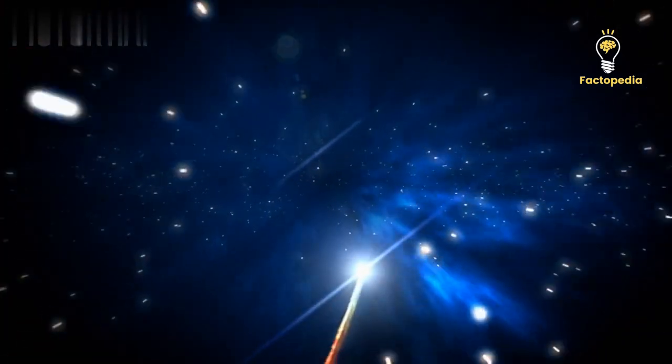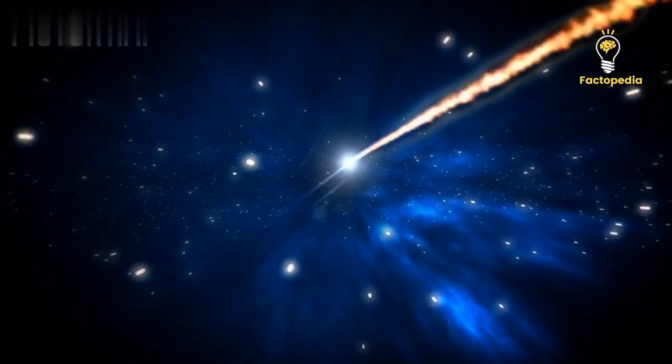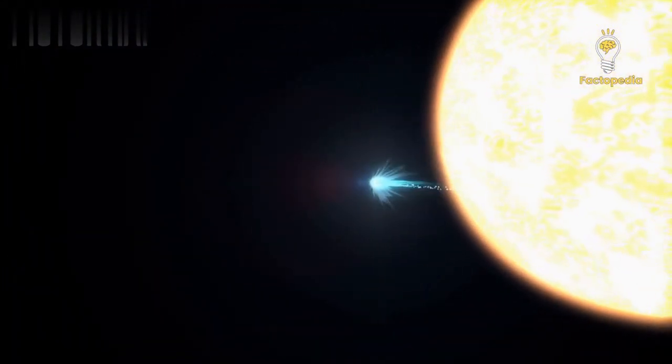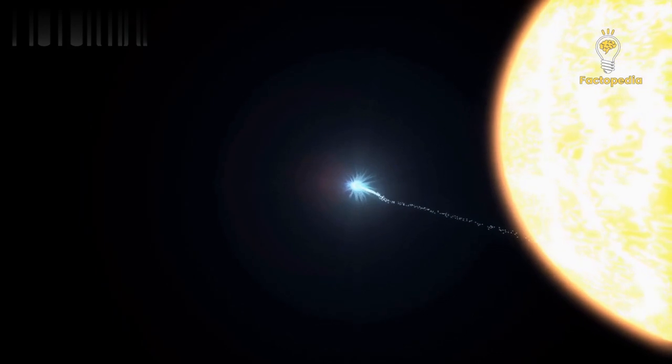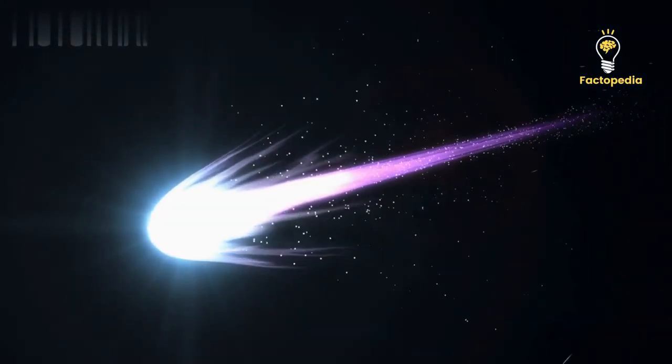The comet was discovered when it was about 1.1 billion kilometers away from Earth, but on September 27, 2024, it will get much closer to the Sun, coming within 58 million kilometers of it. This change in distance will cause the comet to become much brighter.